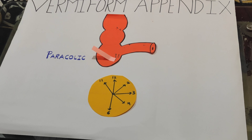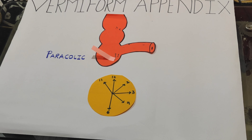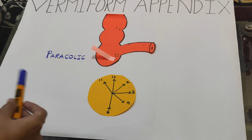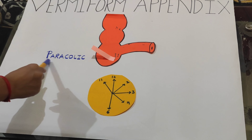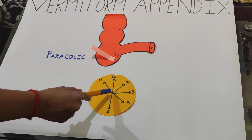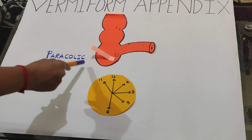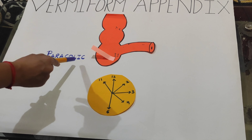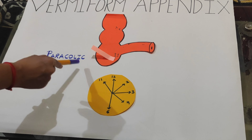The first position of the appendix is paracolic, when the tip points upward and to the right. When compared to the hands of a clock, it is also called the 11 o'clock position.